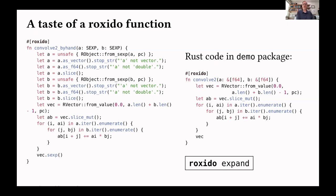We have some macros to help facilitate things. For example, A is really just a pointer to that obscure structure in R. But what we can do is take that structure and see if it's a vector — and if not, produce a nice error. We can treat it as F64, and if not, produce a nice error. We can get the slice. All of this is generated automatically by the macro, so the user just sees the clean version. But you can actually see what the macro expands to by typing roxido expand.